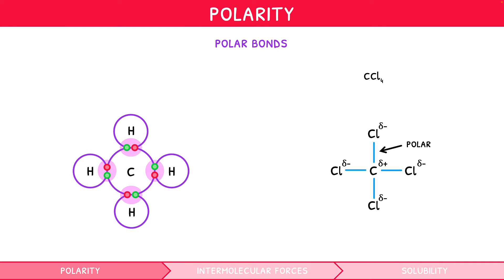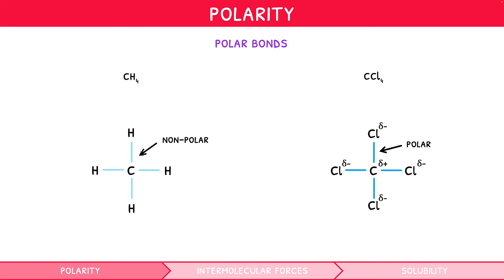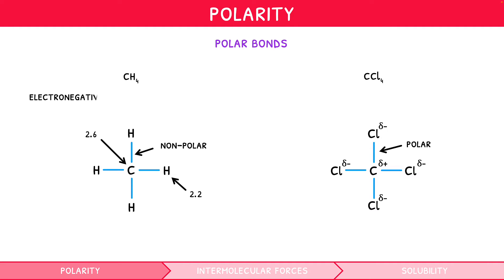It is worth noting that for CH4, the C–H bonds are considered nonpolar, despite carbon having an electronegativity of 2.6 and hydrogen 2.2. This is because there must be an electronegativity difference of at least 0.5 for a bond to be considered polar. However, this point is minor, and the concept of a polar bond is now clear.